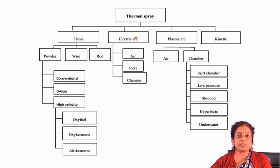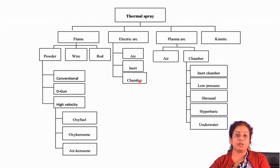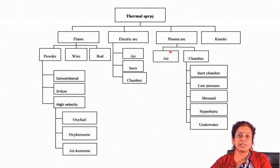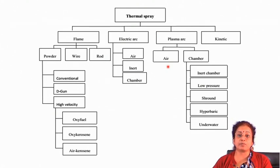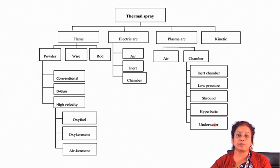For electric arc spraying, sub-classifications include air electric arc spraying, inert electrical arc spraying, or chamber spraying where a special chamber is used. Under plasma spraying, it may be air plasma spraying or chamber plasma spraying. In air plasma spraying, the operation is done in normal air environment. In chamber plasma spraying, you can use an inert chamber, low pressure chamber, shrouding chamber, hyperbaric chamber, or underwater chamber, depending on the material and substrate. Kinetic spraying is a cold process where the powder is not heated but propelled at very high velocity.